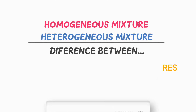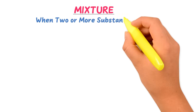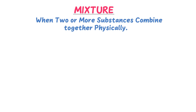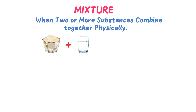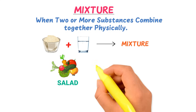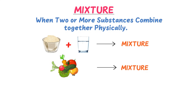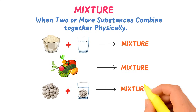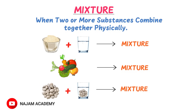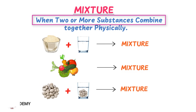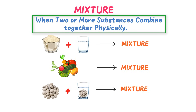let me quickly teach you the concept of mixture. When two or more substances combine together physically, it is known as a mixture. For example, when sugar plus water is combined together, we get a mixture. When you mix different vegetables to form salad, you get a mixture. Similarly, when you put small pebbles or sand into the water, you get a mixture. Thus, remember that when two or more substances combine together physically, we get a mixture.